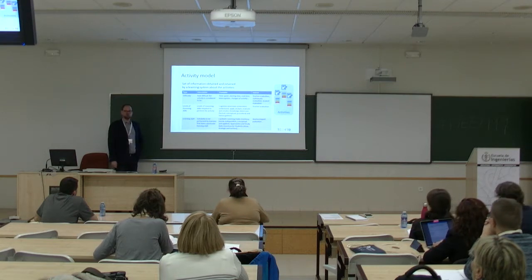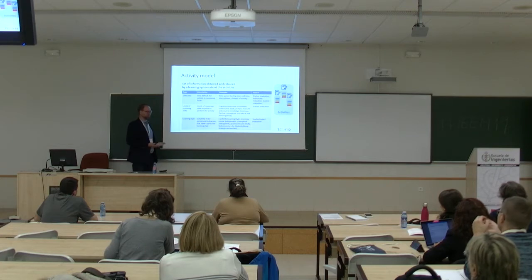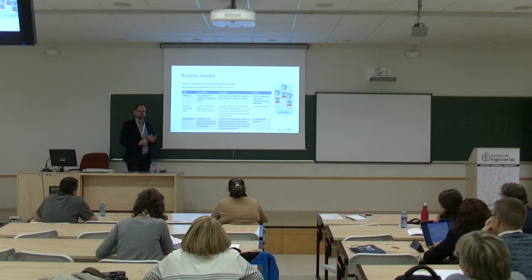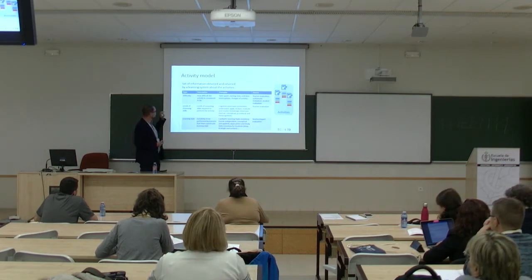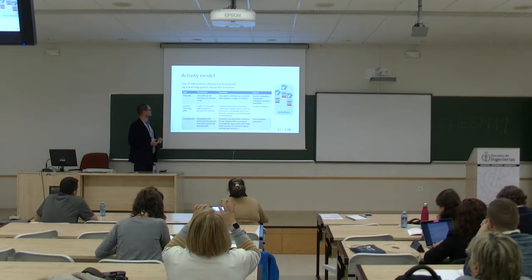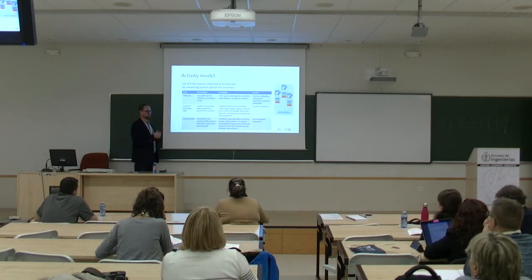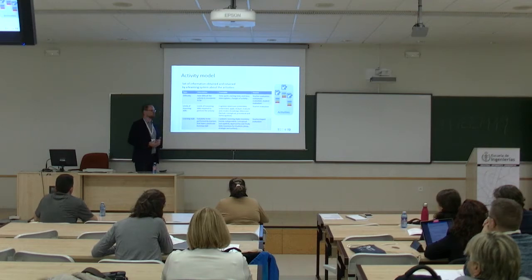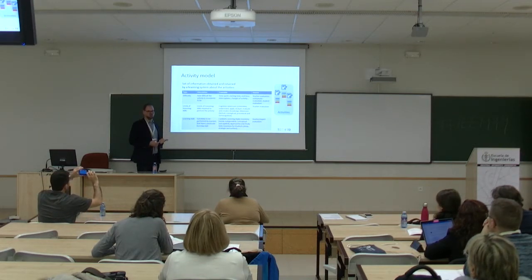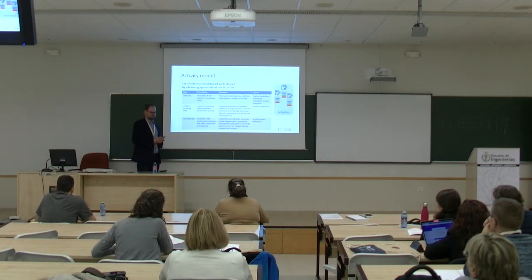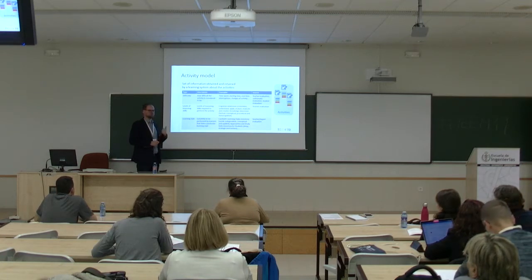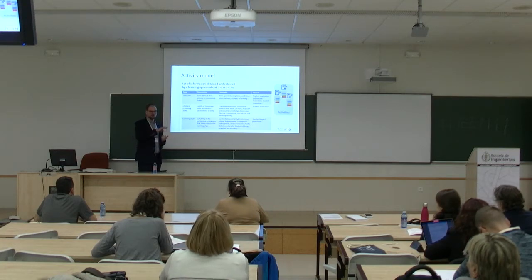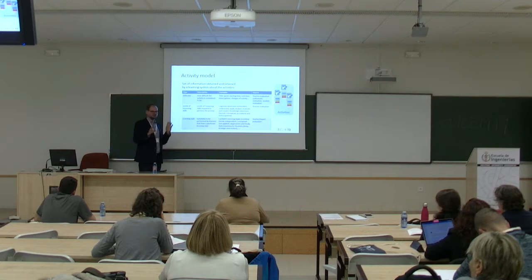We also have the activity model. The activity model is a set of information obtained by the learning system about the activities. We have information about difficulty — how difficult the activity is for the learners — and time spent to complete it, which is quite similar to the behavior of the students. There is also the teacher evaluation: the teacher has to evaluate how difficult the activity is, but it can also be evaluated automatically or even by the students. With many students doing the activity, you can approximate difficulty by looking at the time they spend and the results.